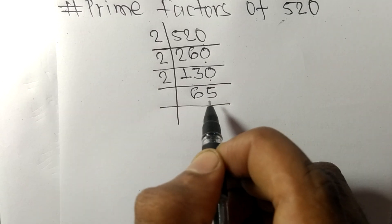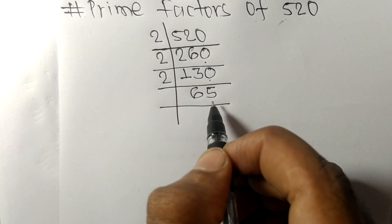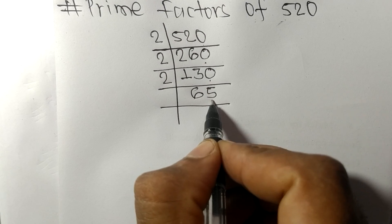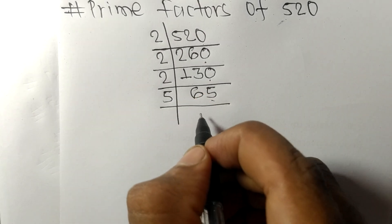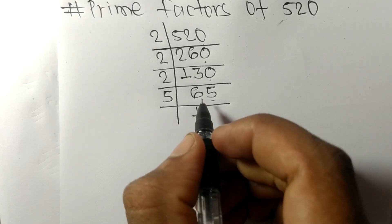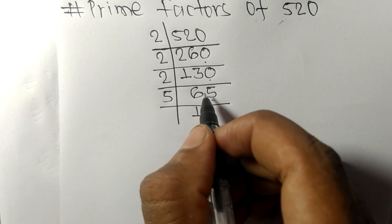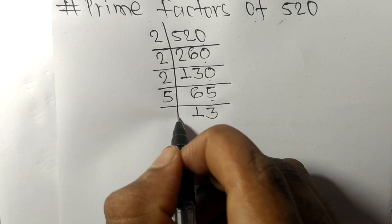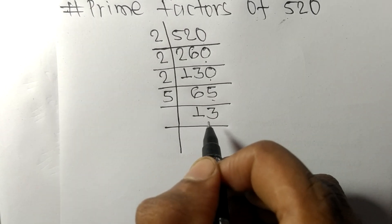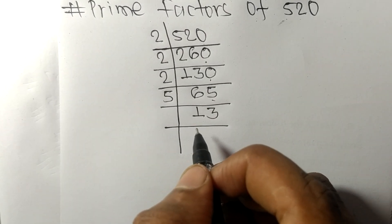Now we have 65 and it has 5 at last so it is divisible by 5. 5 times 1 means 5, remainder 1. 1, 5, 15. 5 times 3 means 15. Now we got here 13 which is our prime number.